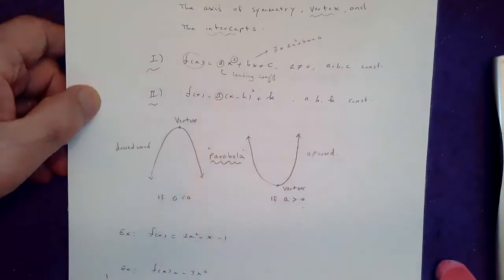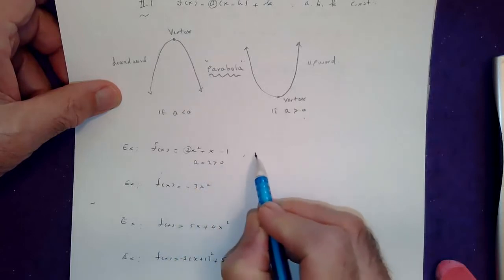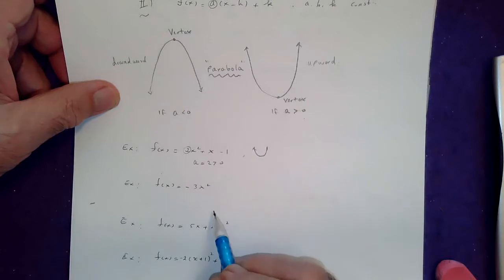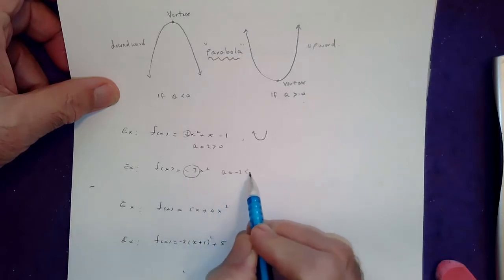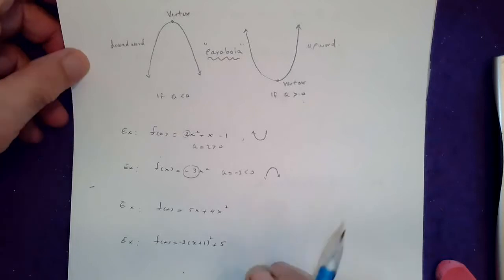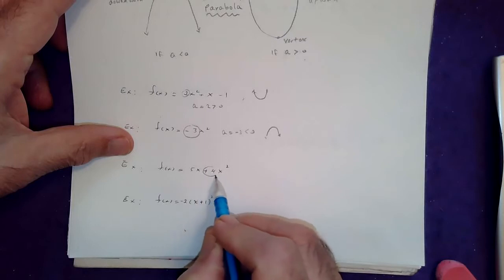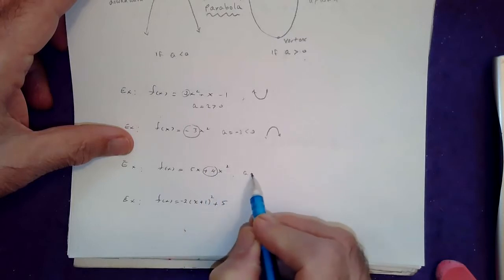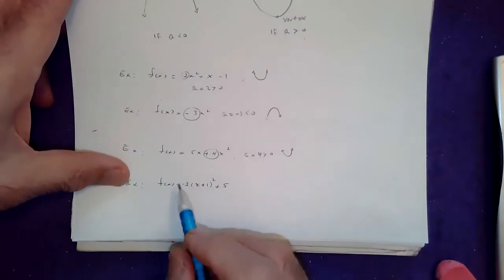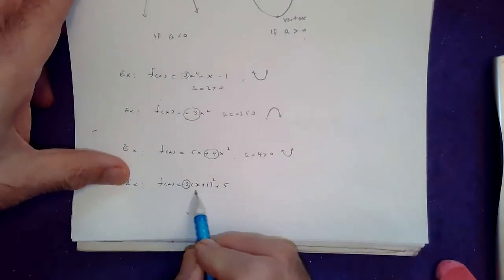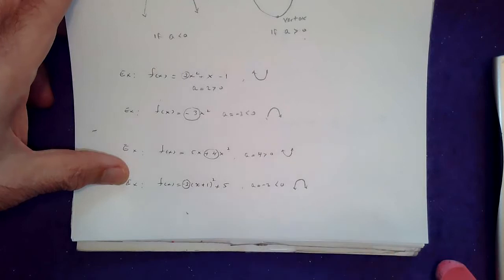A is the leading coefficient. For instance, in one problem the leading coefficient is 2, which is positive, so the parabola opens up. In another, the leading coefficient attached to x squared is negative 3, so that parabola opens downwards. Here, the leading coefficient is 4 — positive — so the parabola opens up. And here, the coefficient in front of the parentheses is negative 2, which is less than 0, so the parabola opens downwards.